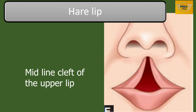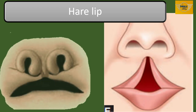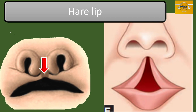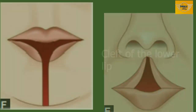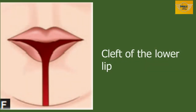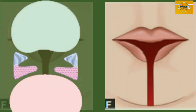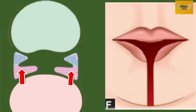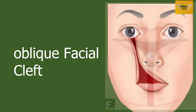We also have another cleft called midline cleft of the upper lip. In this condition, there is a defective development of the lowermost part of the frontonasal process. We'll also look at cleft of the lower lip. When the two mandibular processes fail to fuse with each other in the midline, the lower lip shows a defect in the midline.